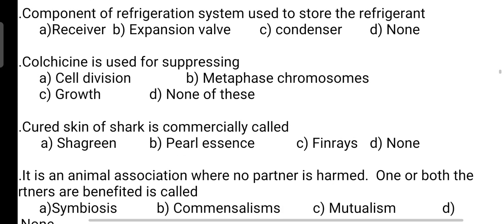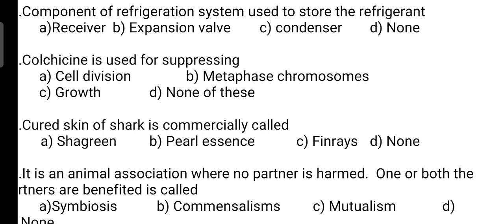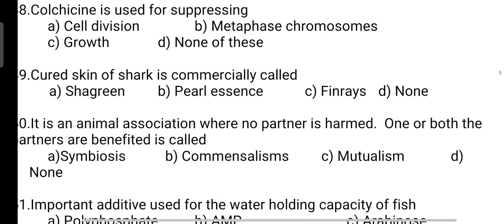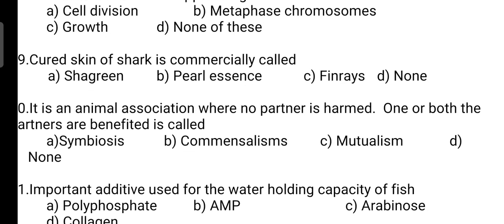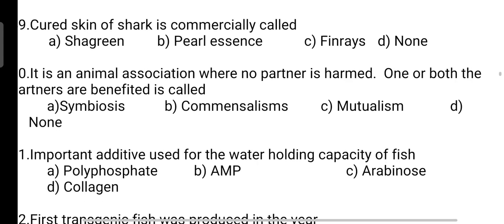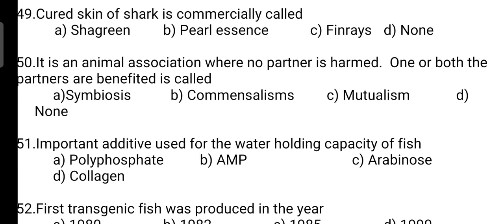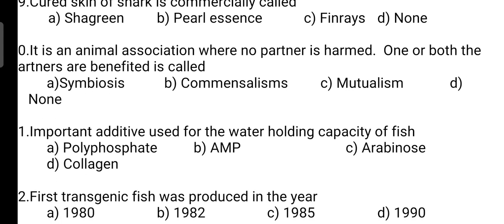Colchicine is used for suppressing? Correct answer is Option B — it is used to suppress metaphase chromosomes. Next, cured skin of shark is commercially called? It is commercially called shagreen — Option A is correct. Next, an animal association where no partner is harmed and one or both partners are benefited is called? This is called symbiosis — correct answer is Option A.